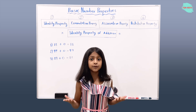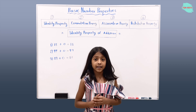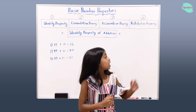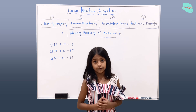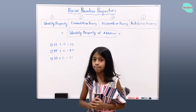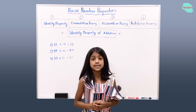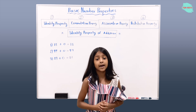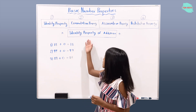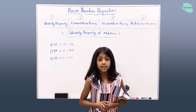All right, so now let's review what we learned today. We learned about basic number properties. We had four different properties, which are the identity, commutative, associative, and the distributive. In this video, we only talked about the identity property of addition. The sum of any number and zero will give us that number. And in the next video, we will be talking about identity property of multiplication. I hope you learned something from this video. Thanks for watching. Bye!